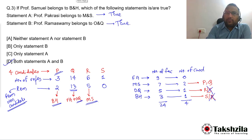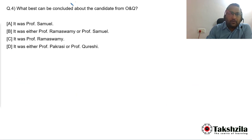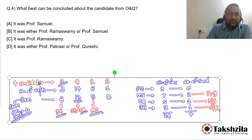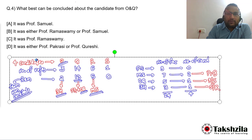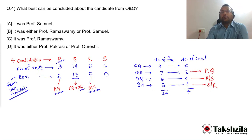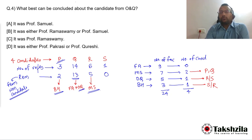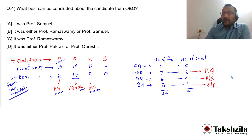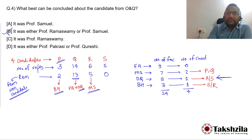Question 4: What best can be concluded about the candidate from O&Q? Note that the additional data given in question 3 applies only to that question and cannot be carried forward here. From our general analysis, the candidate from O&Q must be either Professor R or Professor S. So option B is correct.